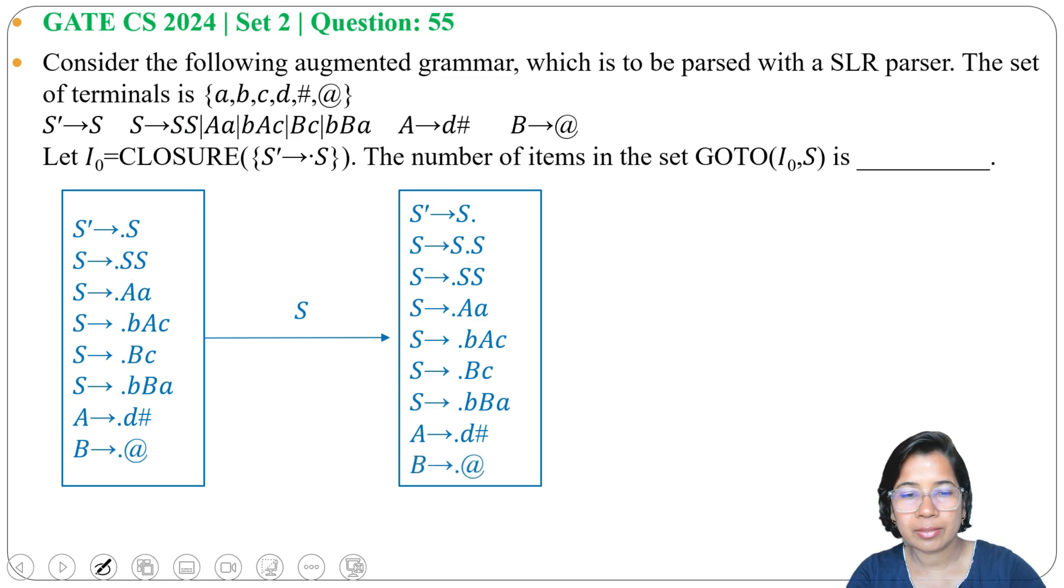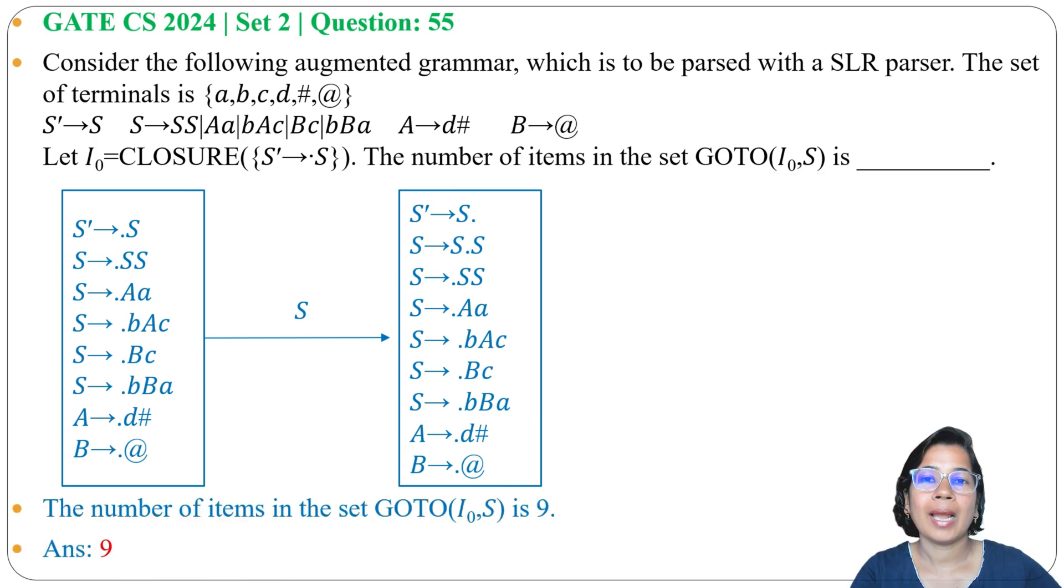Now count the items here: 1, 2, 3, 4, 5, 6, 7, 8, 9. So there are 9 items in the set GOTO(I₀, S). That's why the answer will be 9. I already